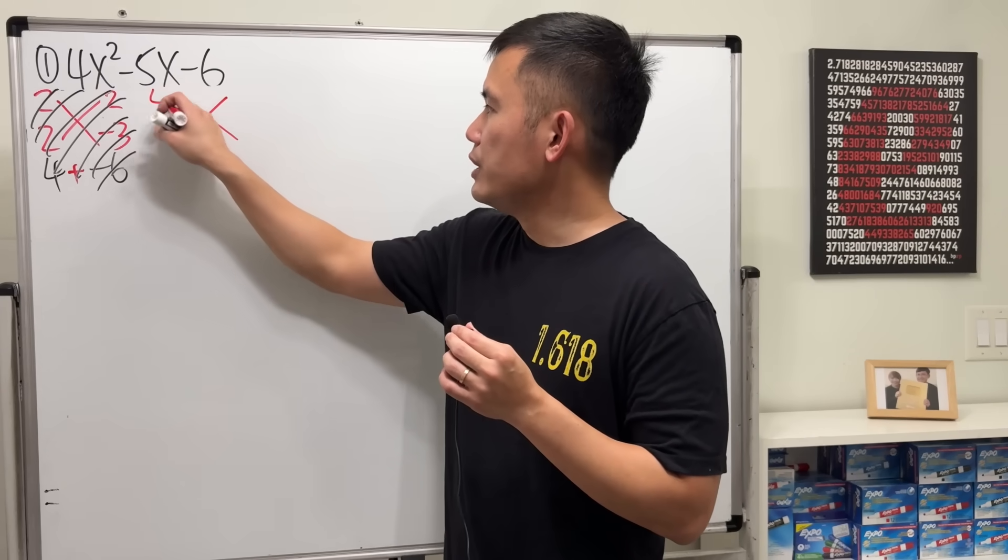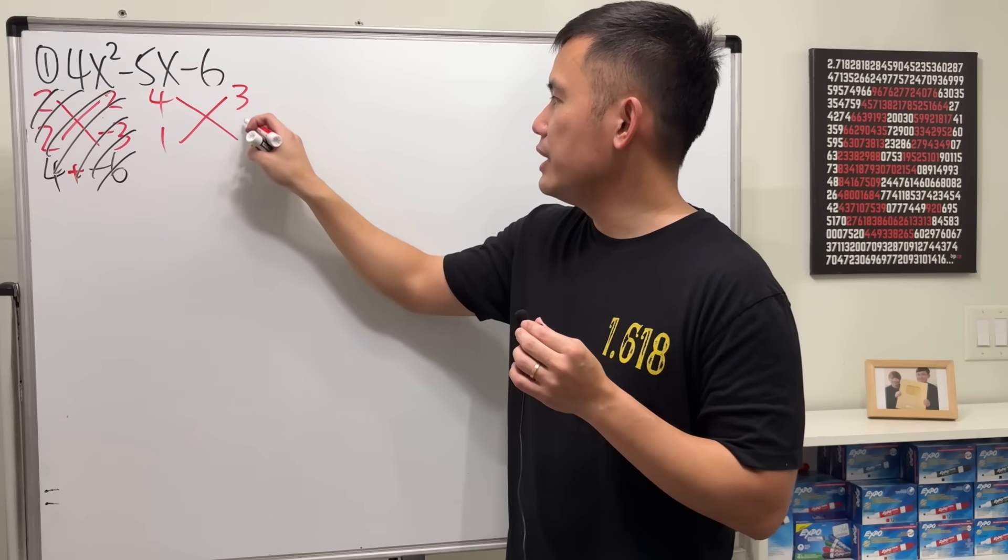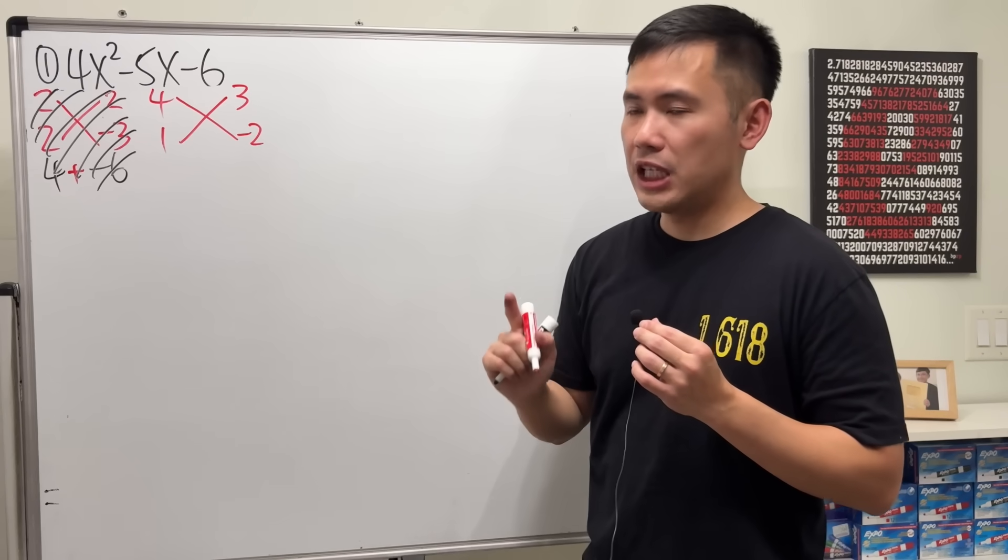Here is the correct combination. We need 4 and 1 and 3 and negative 2. And the order matters. Keep that in mind.